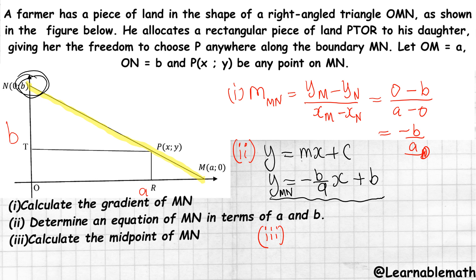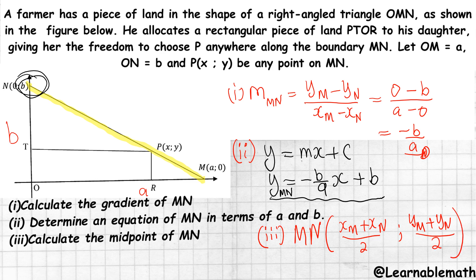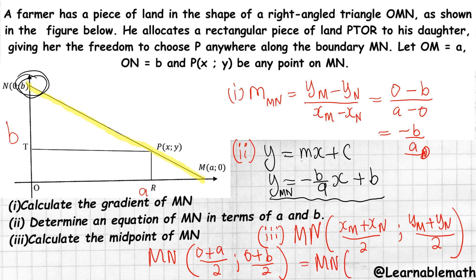Part three: calculate the midpoint of MN. Using the midpoint formula — (x_M + x_N)/2 and (y_M + y_N)/2 — x at M is 0, x at N is a, y at M is 0, y at N is b. So the midpoint of MN is (a/2, b/2).